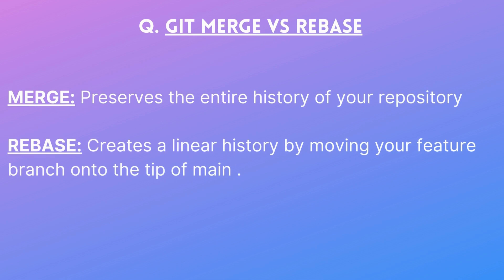Git merge versus rebase is another common question. With `git merge`, the entire commit history of the feature branch is preserved and both branches are merged together — history is maintained. With `git rebase`, the full history is not kept; instead the feature branch is attached to the tip of the target branch. If you want to keep all commit history, use merge. If you want a clean, linear history with a single commit, use rebase.